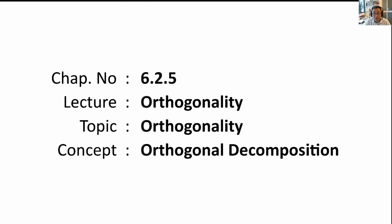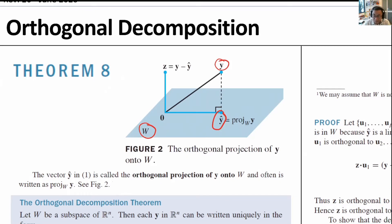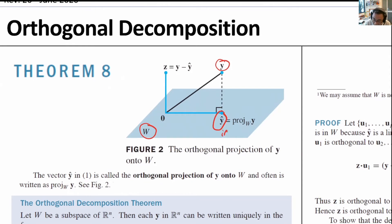This is 6.2.5 orthogonal decomposition. The problem at hand is that we are given y, the vector, and we are given w, the subspace. We wish to find the estimate of y in the subspace of w that best represents y.